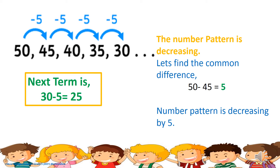When you want to find the next term after 30, subtract the common difference: 30 minus 5. Why 5? Because 5 is the common difference of this number pattern. So the answer is 25.